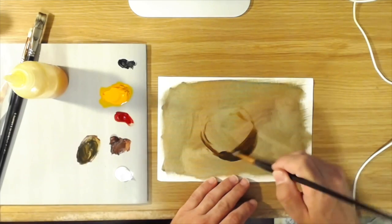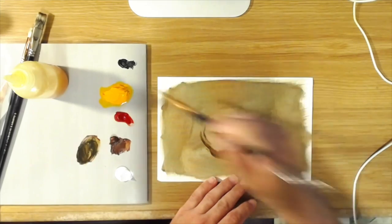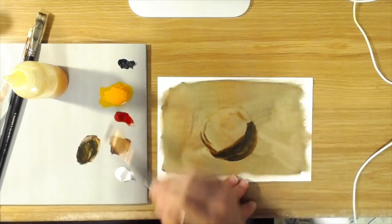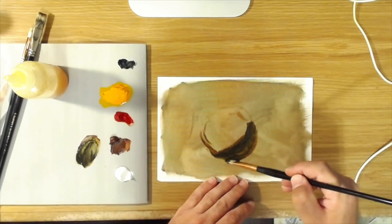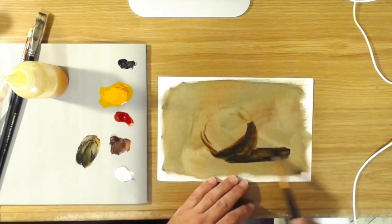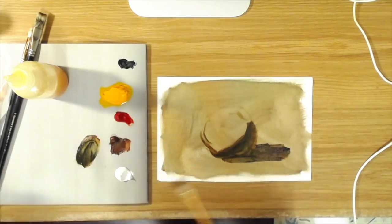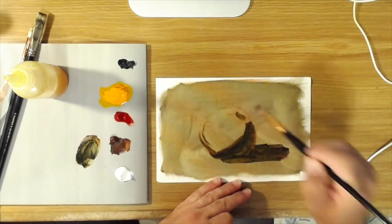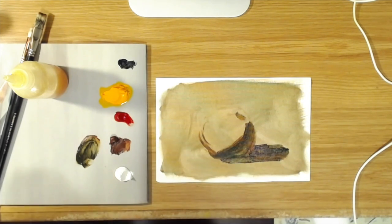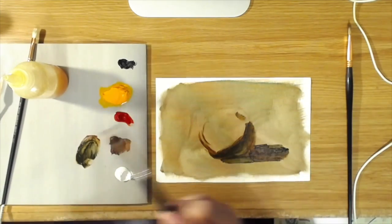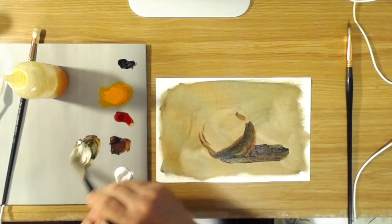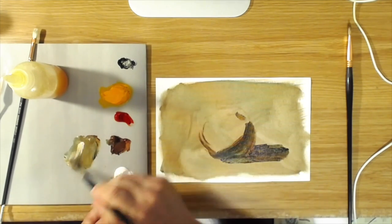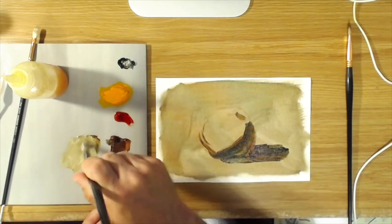Now the traditional a la prima method you start by putting in the shadows relatively thinly. I've got a little mixture of black and burnt sienna here. I'm going to put in a cast shadow underneath. And then let's put in some background.